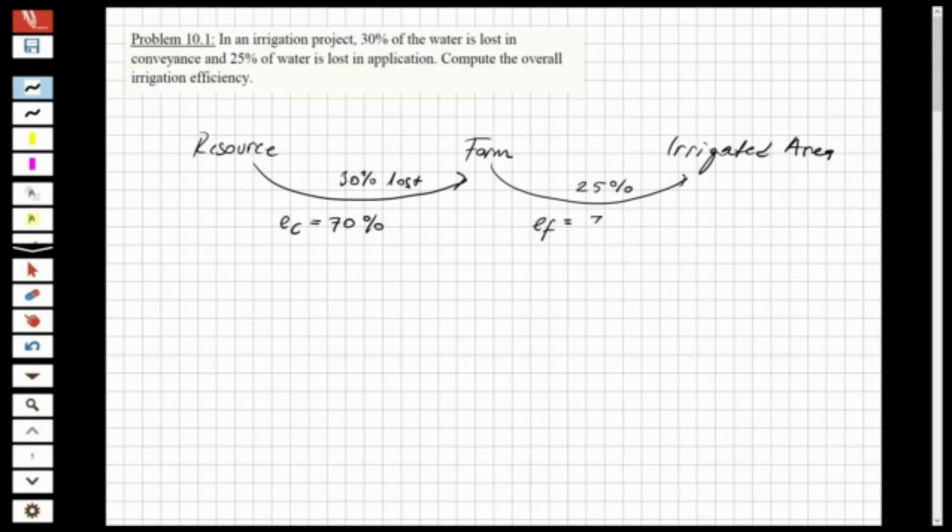So now I have two efficiencies. You know the formula of overall efficiency was the conveyance efficiency multiplied with the application efficiency. So if I have the two efficiencies, let's solve it: 70% multiplied with 75% over 100, and equal to 52.5%, 52.5% as overall efficiency.